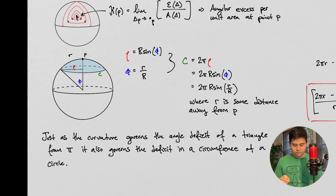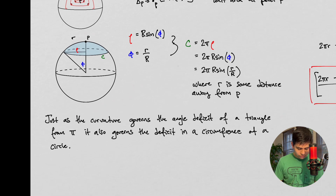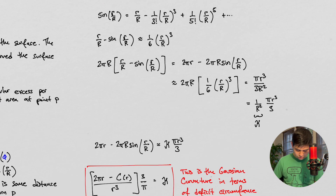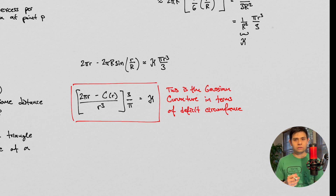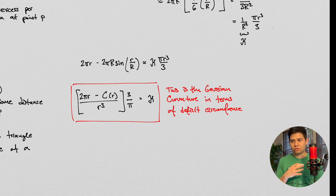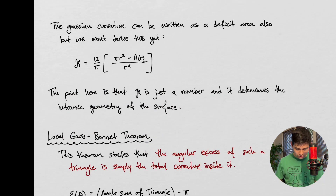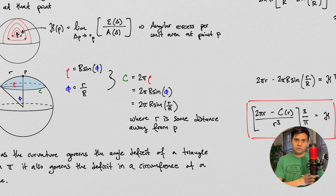Let's do a little bit of math, because this is going to help us derive other formulas. There is something called Gaussian curvature in terms of a deficit circumference. So we can define how much something deviates from flatness not just by the angle deficit, but also by how much a circumference deviates, and also how much an area deviates. We're going to derive the circumference formula now, and we'll just state the area formula — that one requires a few extra things we need to learn first.